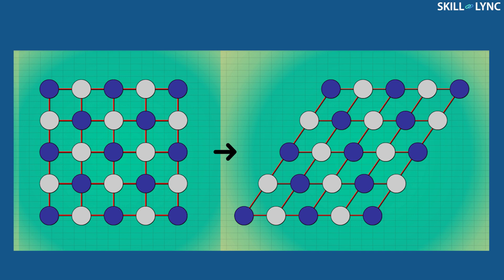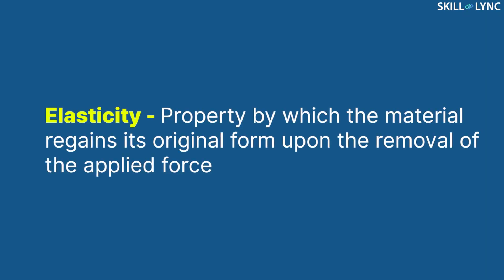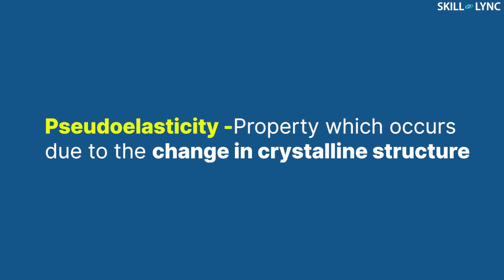In addition to shape memory effect, shape memory alloys have another specific feature called pseudo-elasticity. We come across several elastic materials in our day-to-day life. Elasticity is the property by which the material regains its original form upon removal of the applied force. But pseudo-elasticity is the property which occurs due to the change in crystalline structure.